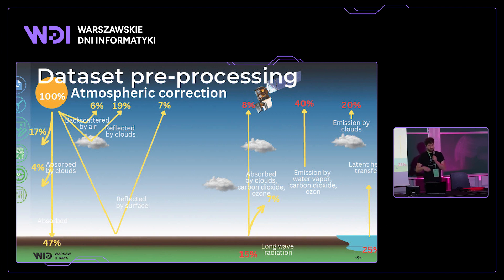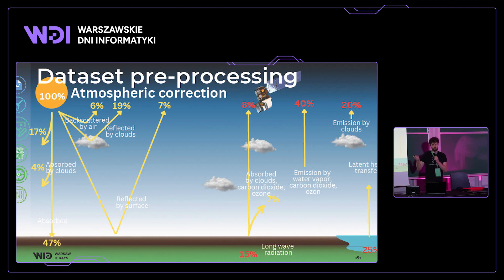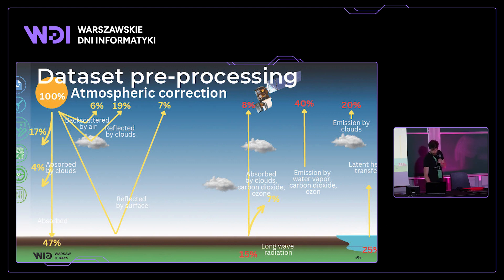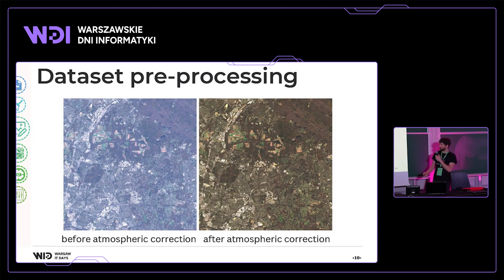There are algorithms that can perform this atmospheric correction. We need to provide data point elevation, air pressure, and so on. If we provide those data, we can algorithmically correct and recover the true surface reflectance. On the image, the left side shows a scene before atmospheric correction and the right side shows the same scene after — it's much more clear.